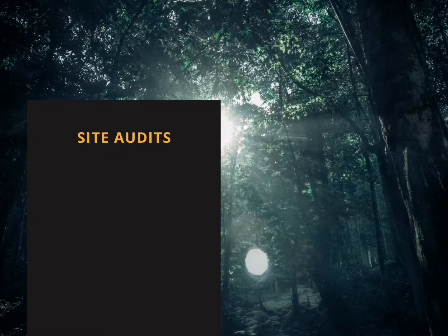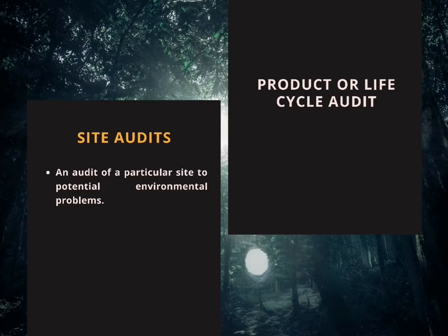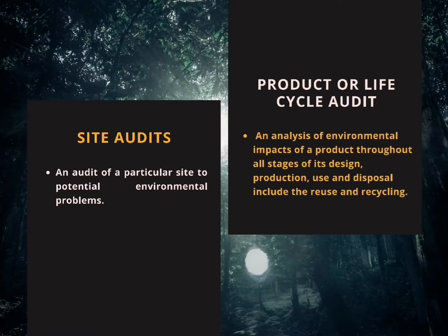The fifth type is site audits — an audit of a particular site to identify potential environmental problems. The sixth and last type is product or life cycle audits — an analysis of environmental impacts of a product throughout all stages of its design, production, use, and disposal, including reuse and recycling. Put another way, product life cycle management means managing everything involved with a product from cradle to grave.